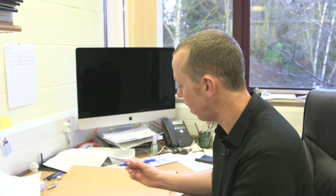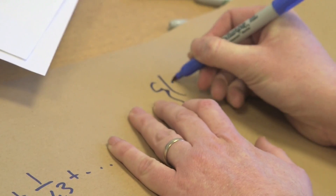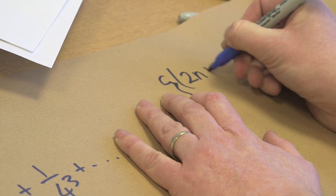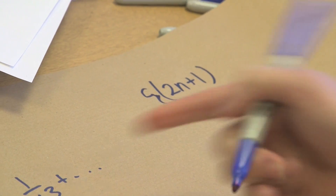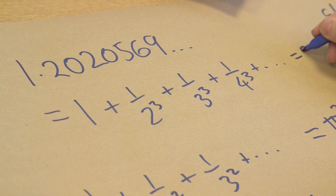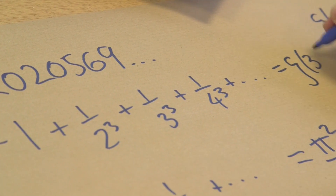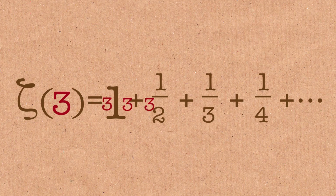What about the odd? Things like zeta of 2n plus 1 — of which, of course, our Apéry's constant is at the value 3. What about this? Is this rational? Is this transcendental? What is it? Euler couldn't work it out. Euler couldn't do it. And nobody knew for hundreds of years what was going on with this number, until this mathematician came along — a kind of maverick mathematician, a good mathematician, but not a great mathematician. A guy called Roger Apéry actually solved this problem.